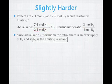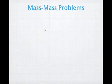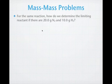Alright, so let's keep going. As we did before, we're not going to be seeing mole to mole problems all that often. So instead what we're going to do is look at some mass to mass problems. So for that same reaction, nitrogen gas and hydrogen gas, how are we going to determine the limiting reactant if there are 20 grams of nitrogen and 10 grams of hydrogen?